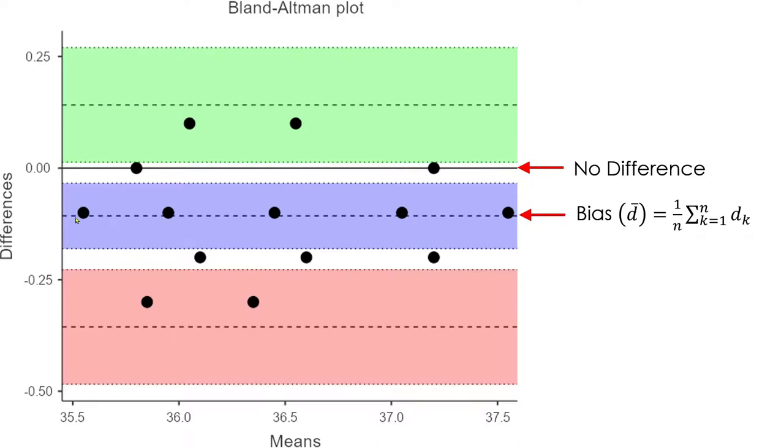And what that means is that because the bias has a negative sign, it was negative 0.1, that means the new method is consistently underestimating the temperature compared to the old method.